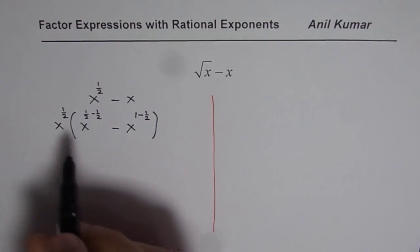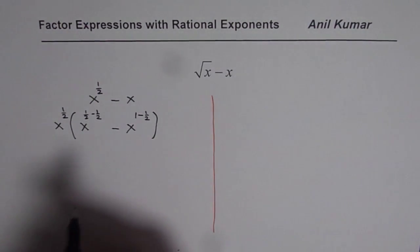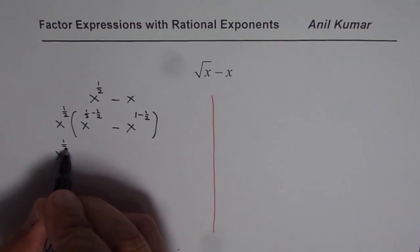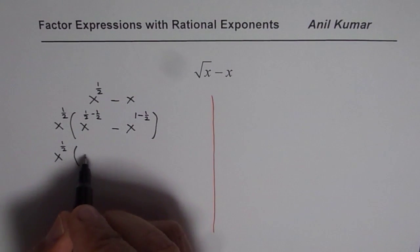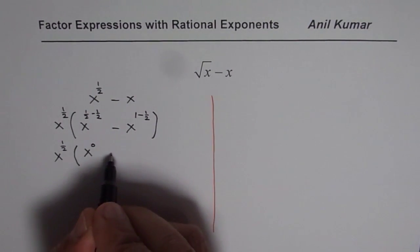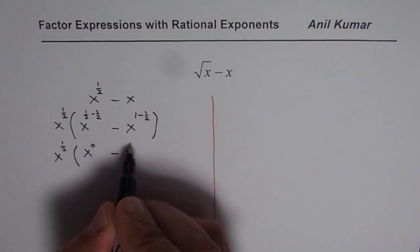That is dividing both by x^(1/2). So you have x^(1/2), and within brackets, 1/2 - 1/2 = 0. So you get x^0 - x^(-1/2).